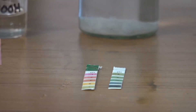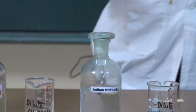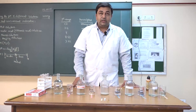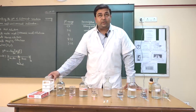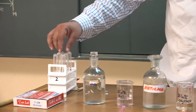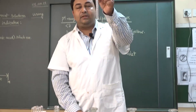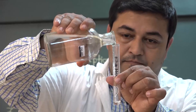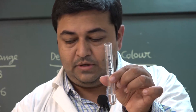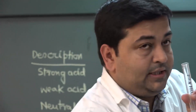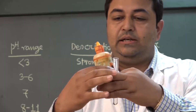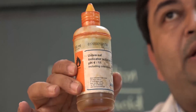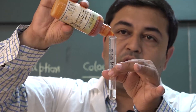From the pH paper we can identify the pH of different solutions. Similarly, we can identify the pH using a universal indicator. In the test tube we will take each solution one by one — starting with HCl. This is the universal indicator bottle, and adding one or two drops we check the color change.